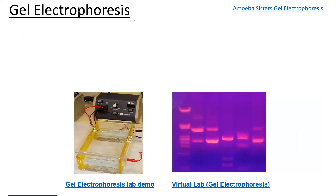What they do is run DNA samples through this lab technology called a gel electrophoresis apparatus. You hear the word 'gel' because there's literally a gel like Jello — it's like a clear Jello pad. Think of it that way. And 'electrophoresis' refers to electricity — there's going to be an electric current running through this apparatus.